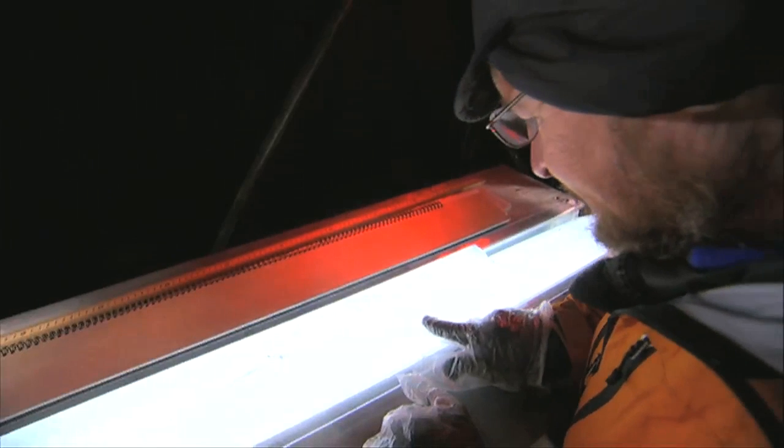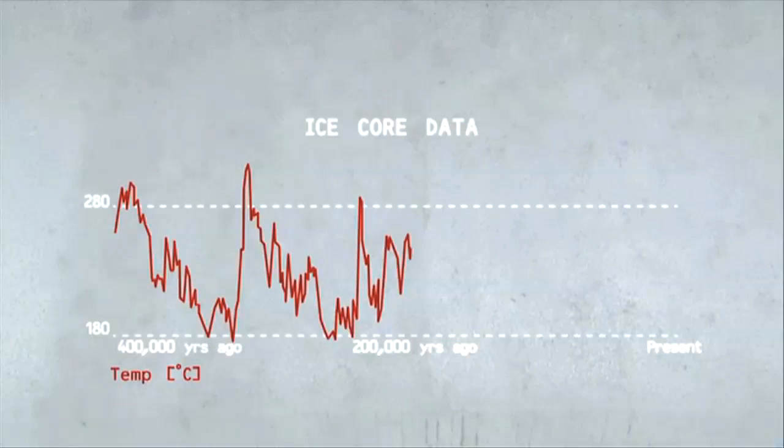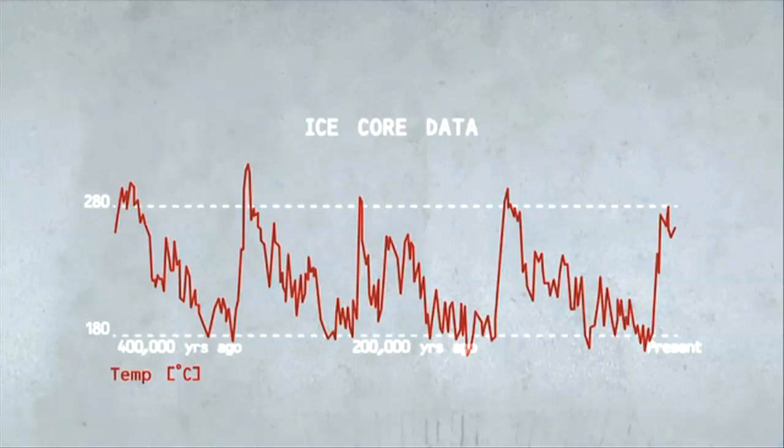By analyzing the chemistry of the oxygen atoms in the ice, you can also see the pattern of rising and falling temperature over time. Colder during the ice ages, warmer during the interglacial periods.